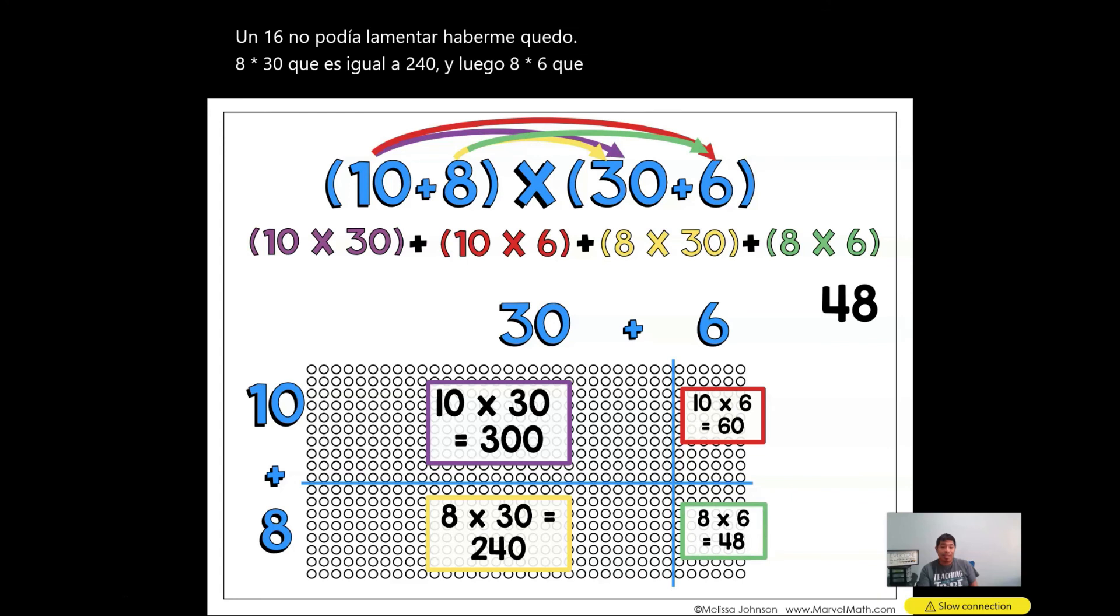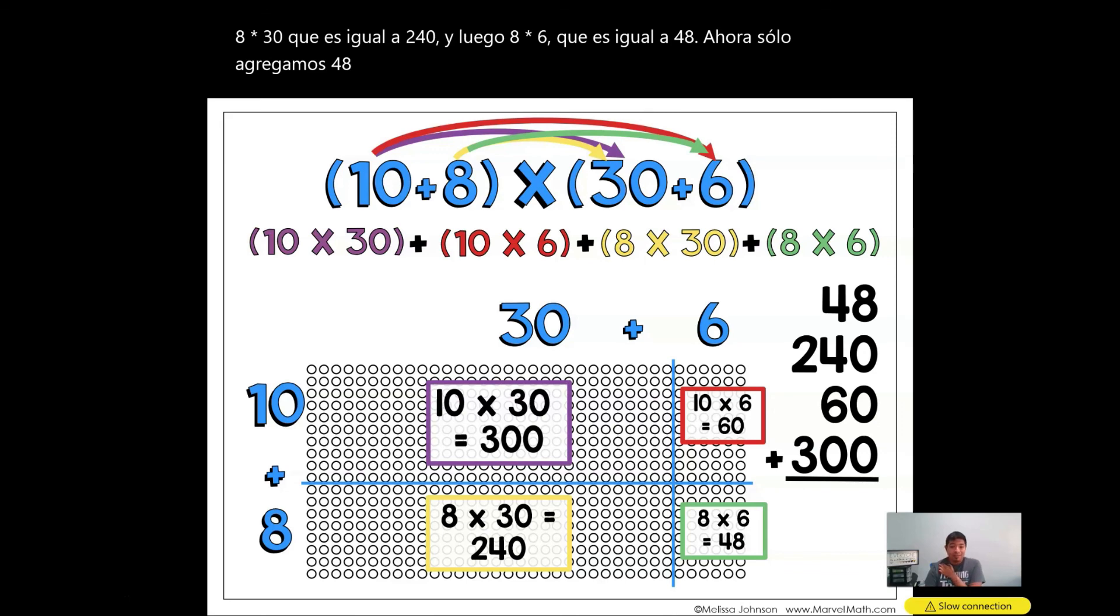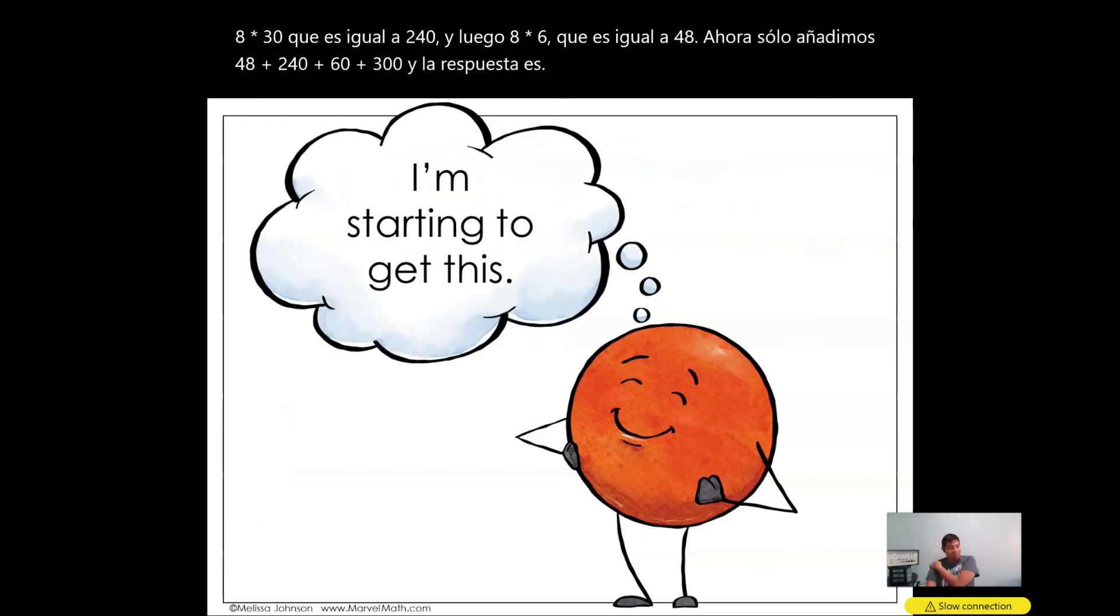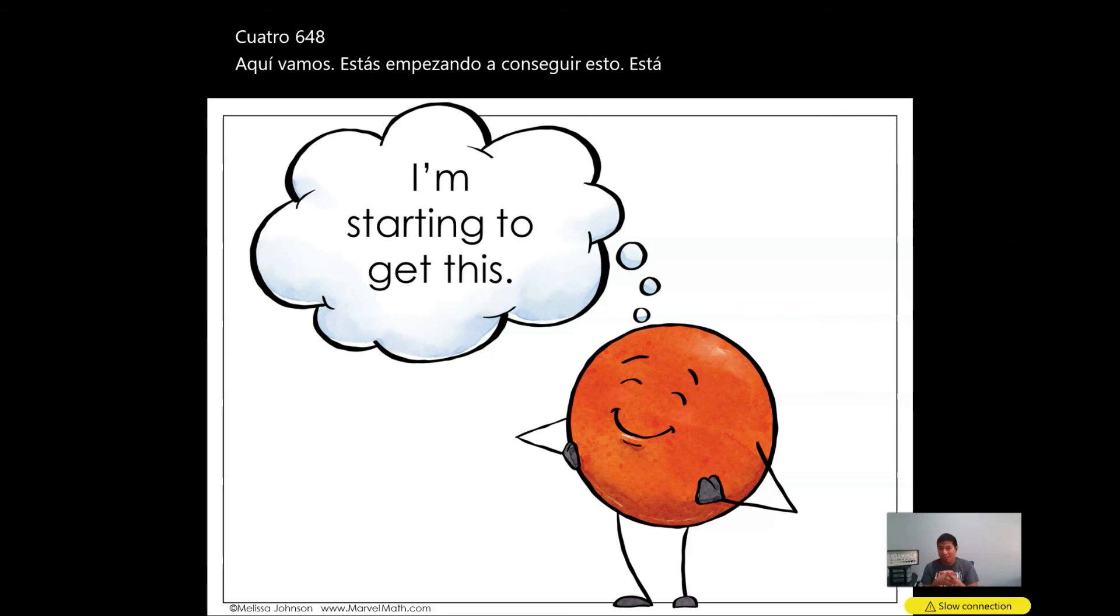Now we just add 48 plus 240 plus 60 plus 300. And our answer is 648. Good job. There we go. You're starting to get this. I hope this helps. This looks just like the area model. I am so proud of you. Thank you for staying and learning and growing your brain. I'll see you next time. Bye.